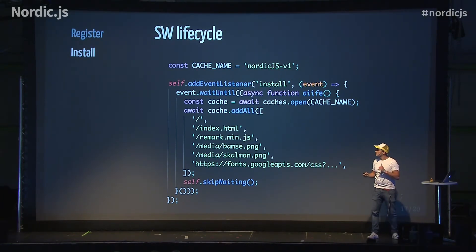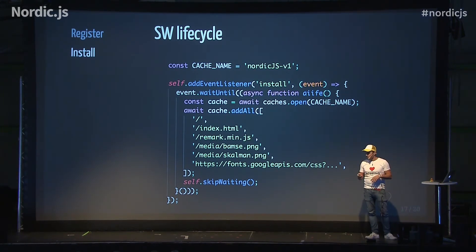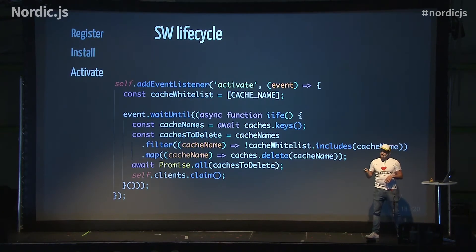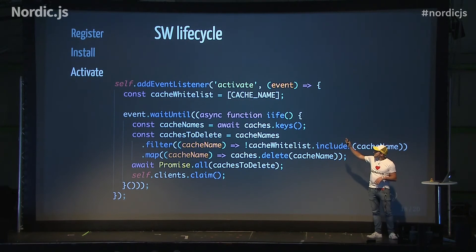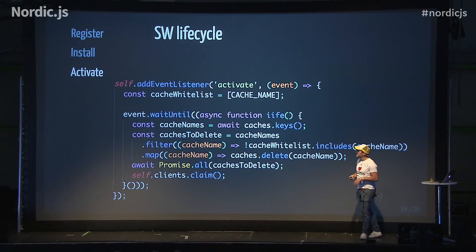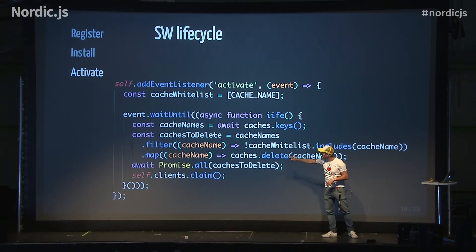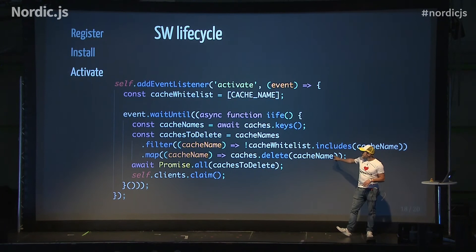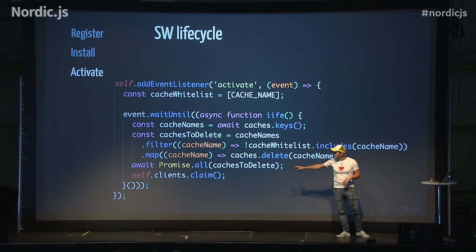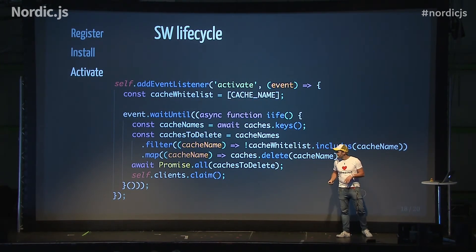We don't have to call skipWaiting, but if we don't, the service worker will enter a waiting state and the user will have to reload the page for it to reach the active state. When we reach the active state, we can purge old caches — because now we have our new caches in place. We just loop through the old caches, filter out the old cache names, and call caches.delete on them.